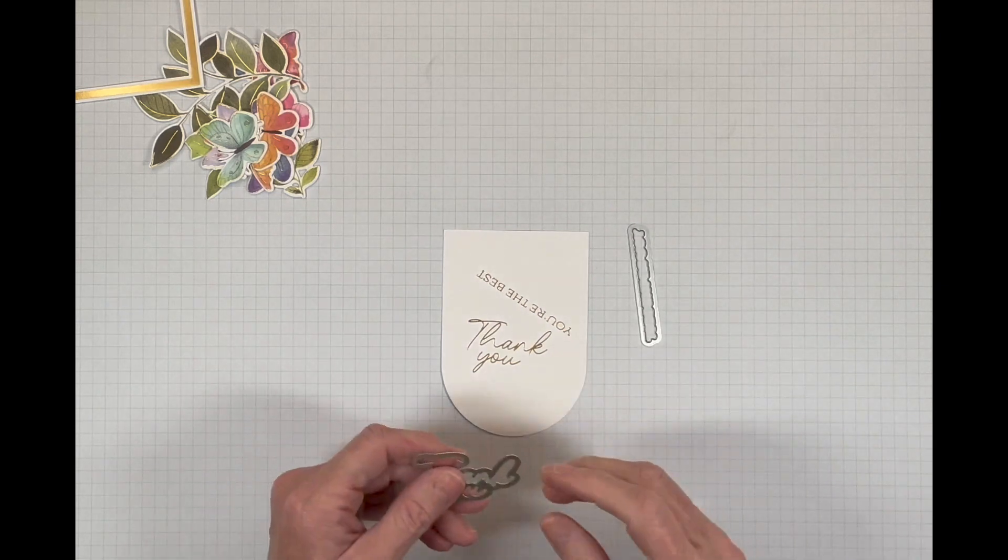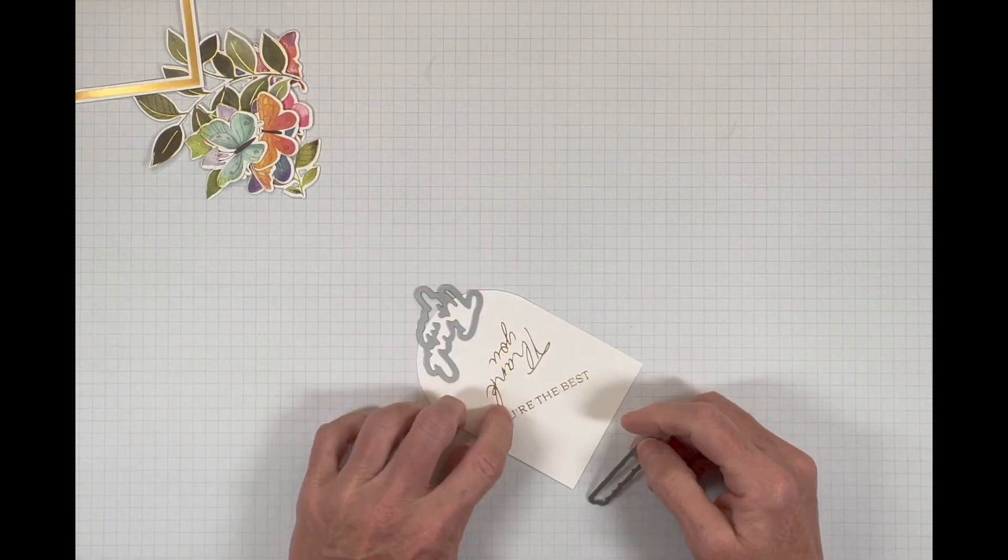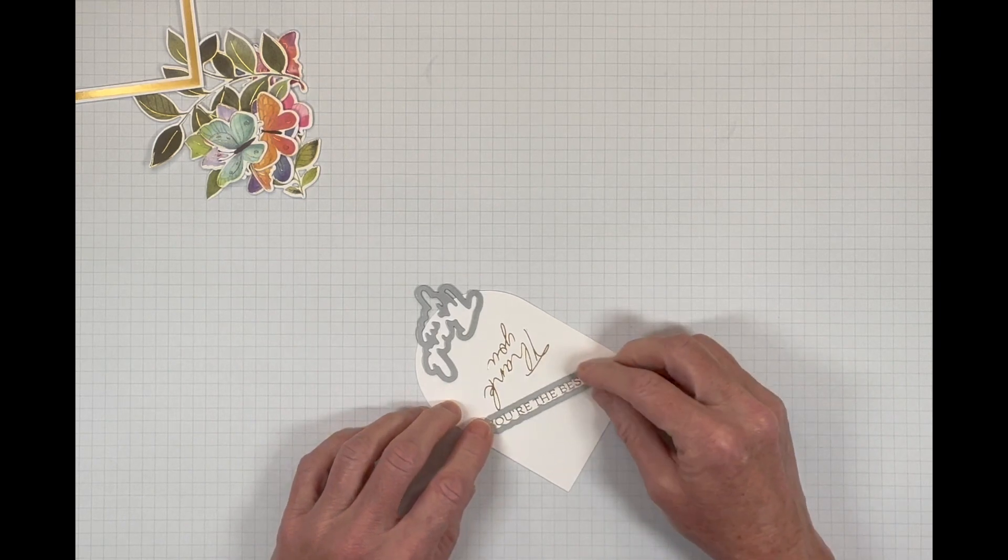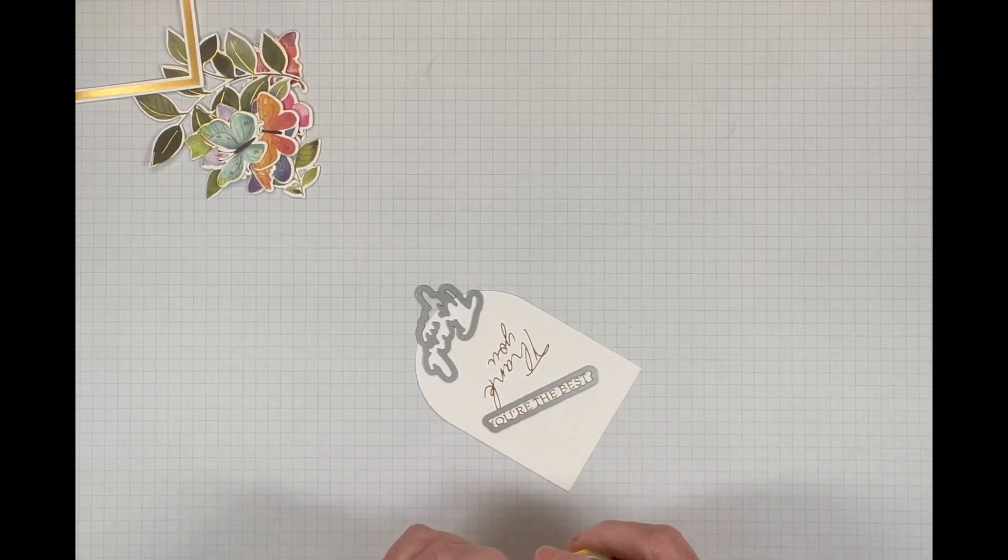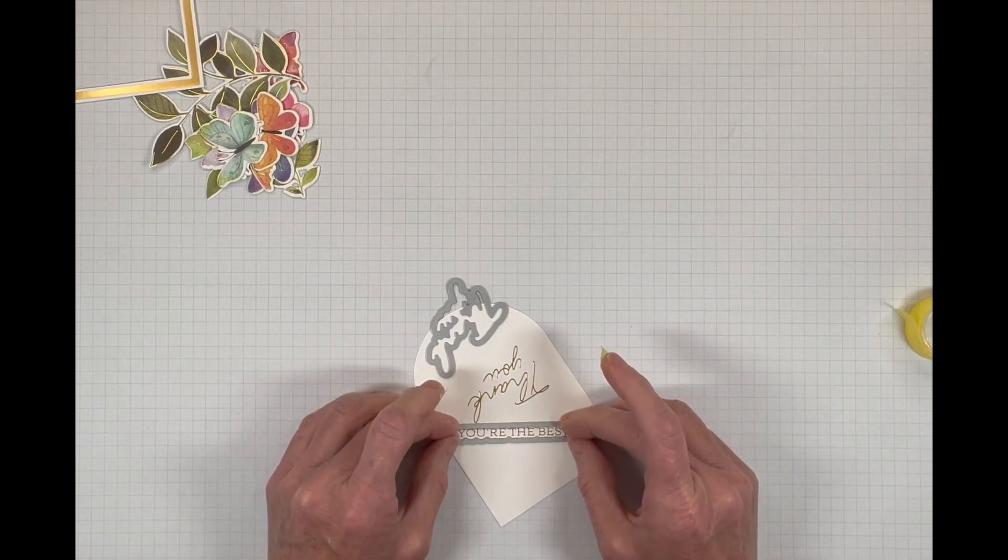Now we can line up our dies. You know what? I might have to do this in two passes because we got a little close there, but the images do cut out pretty close. So let's go ahead and get these die cut.